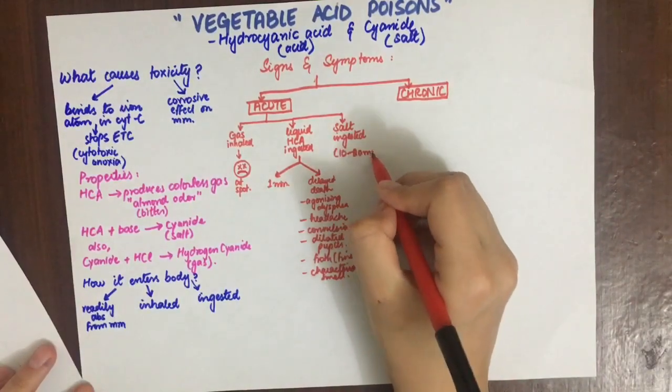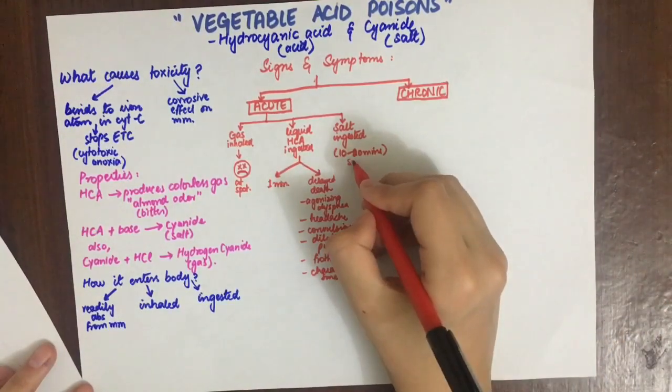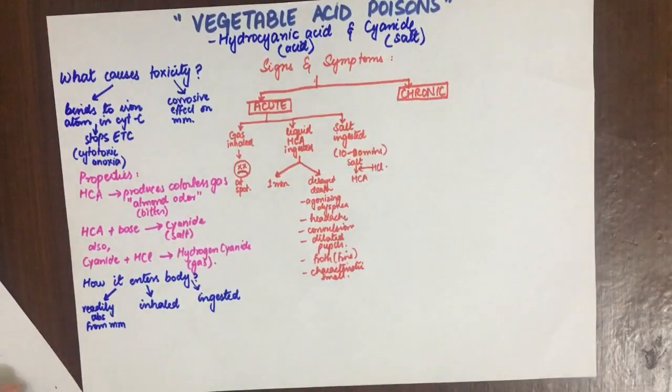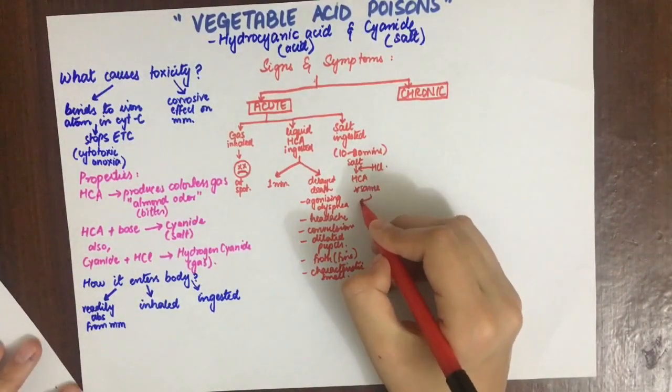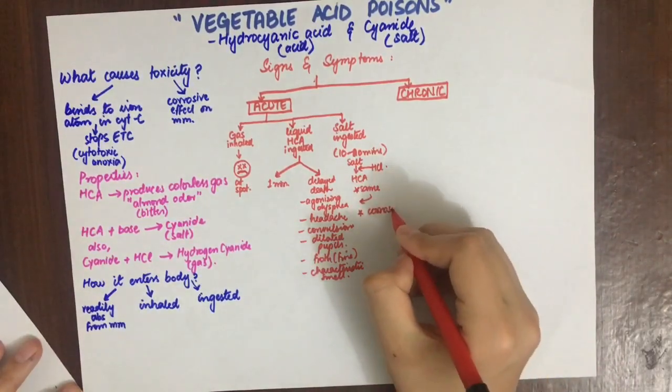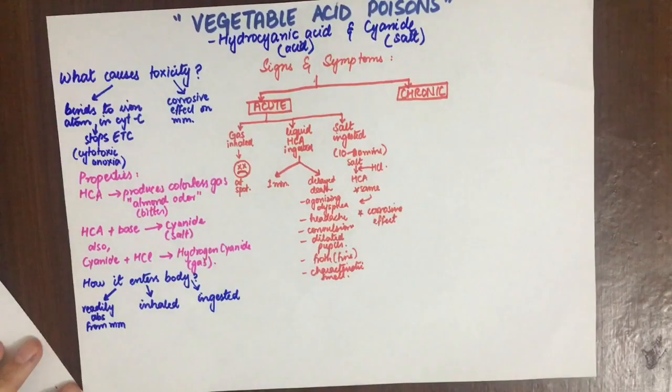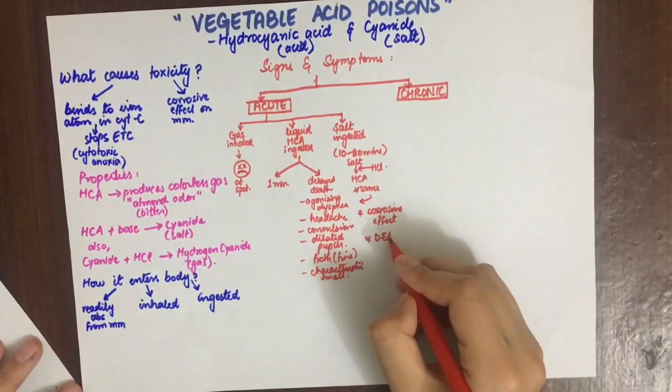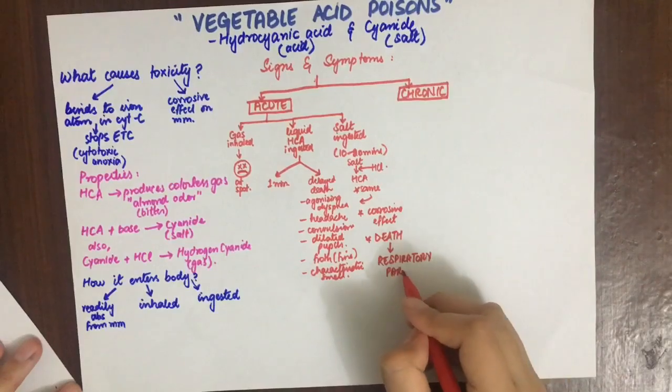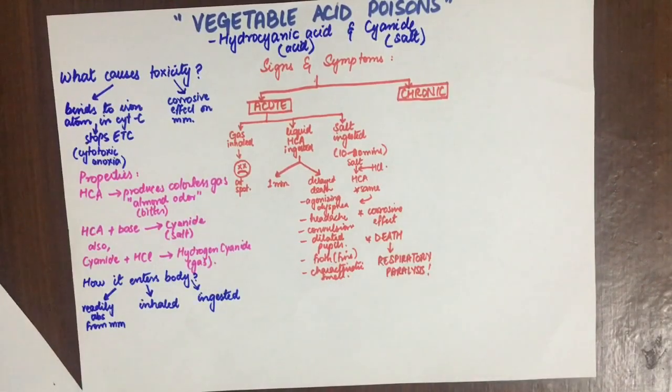If the salt is ingested, symptoms appear in about 10 to 20 minutes until it is acted upon by HCl to liberate hydrogen cyanide gas. Then the effects are the same as hydrocyanic acid. There is also corrosive effect, and death is usually due to respiratory paralysis.